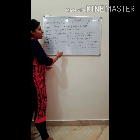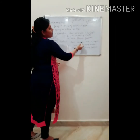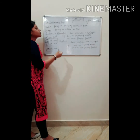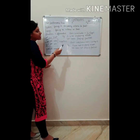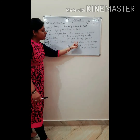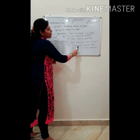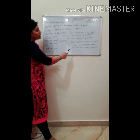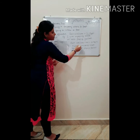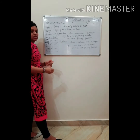Now, structure for a negative sentence: Subject + was/were + not + first form of verb + ing + object. You have to simply add 'not' after the helping verb. Examples: 'I was not enjoying music.' 'We were not playing football.' I have simply put 'not' after 'was' and after 'were' respectively.